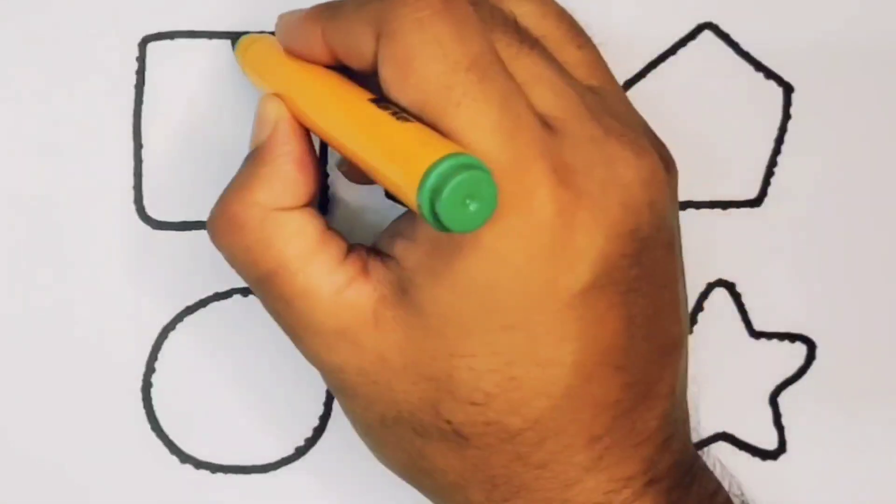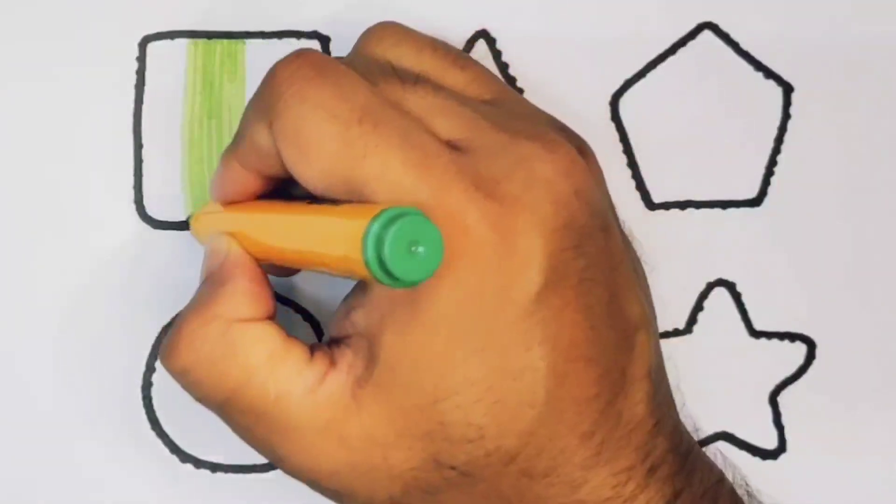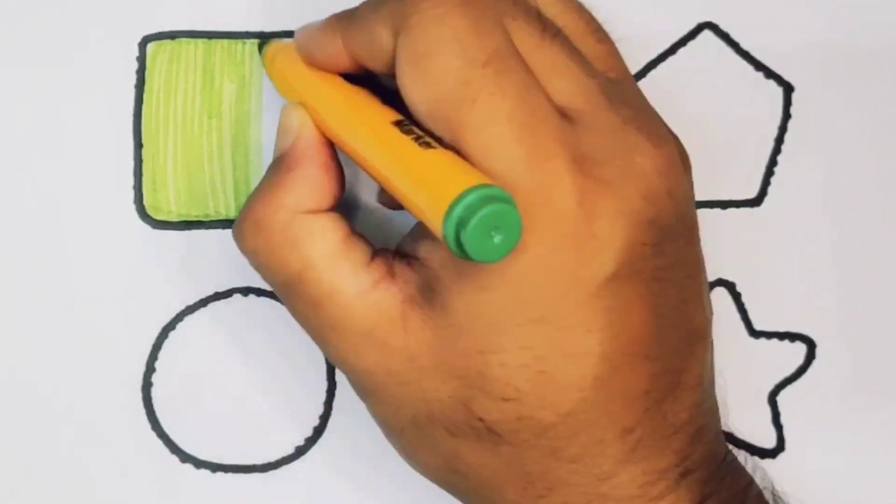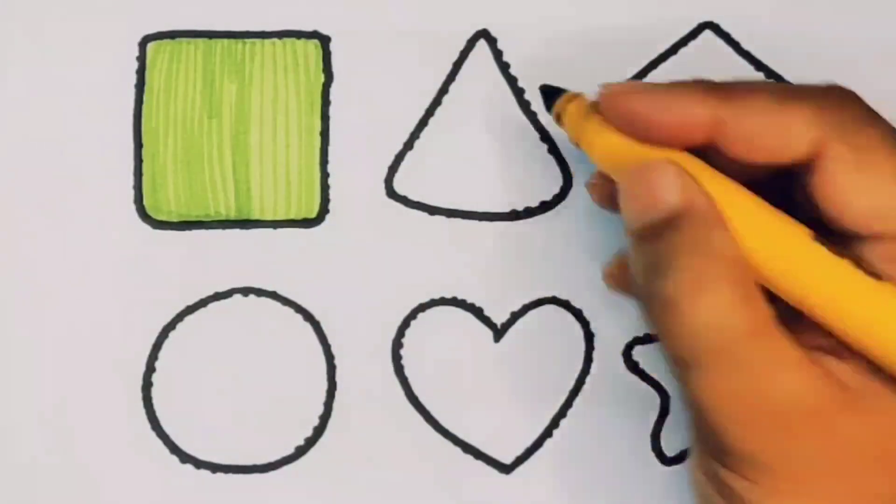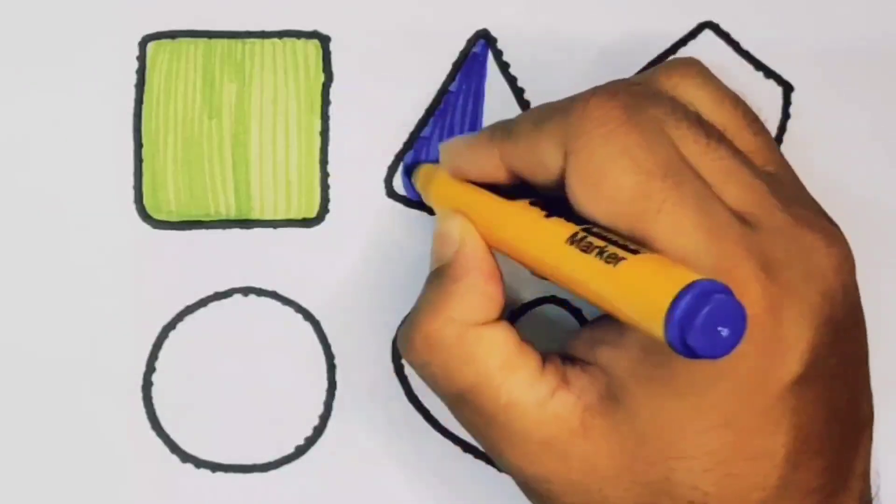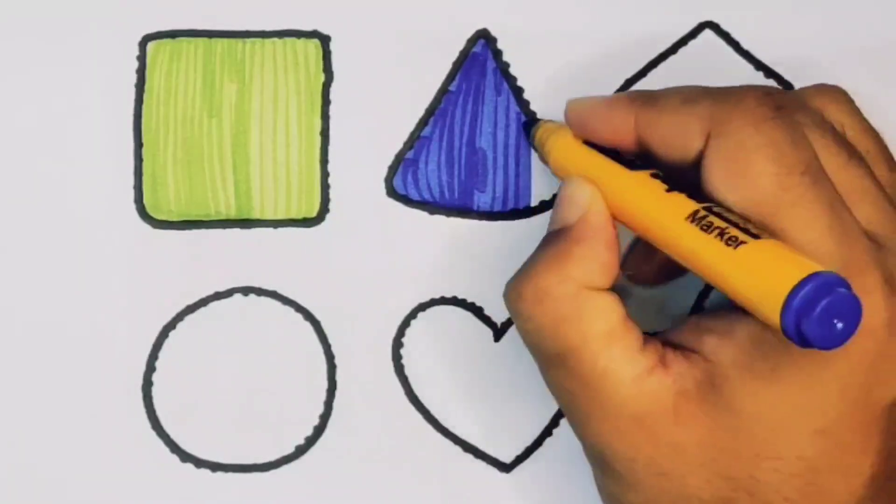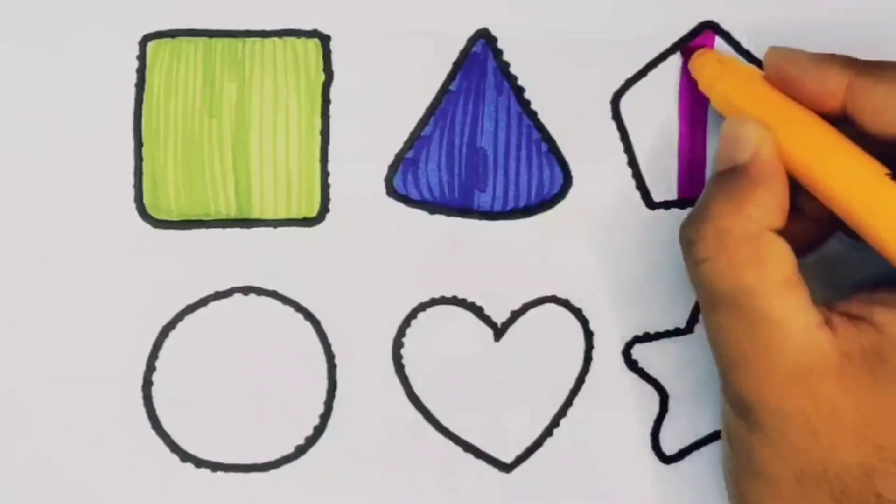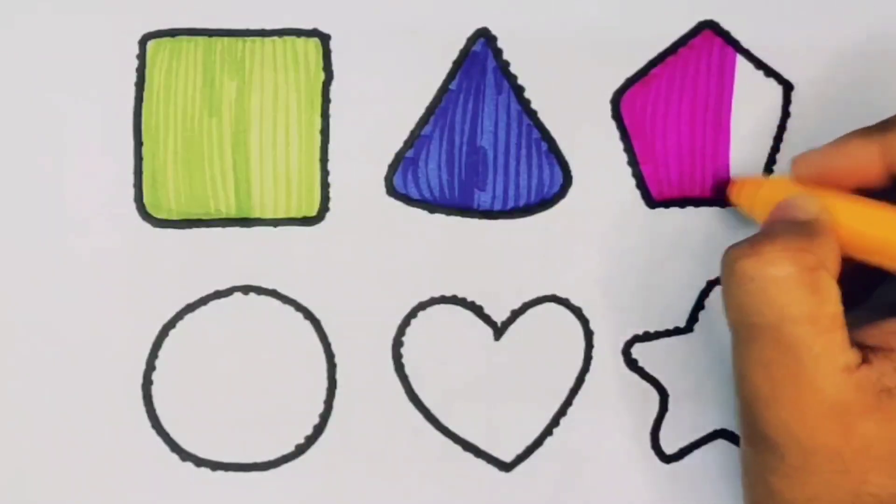Now we're going to put the color. Green color square, blue color triangle, pink color pentagon.